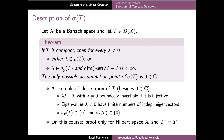This result holds for compact operators on Banach spaces and even on normed spaces which are not complete. On this course we will only present the proof in the special case where X is a Hilbert space and the operator T is self-adjoint. In this case we can shorten the proof a bit, especially since we already know that the residual spectrum of a self-adjoint operator is always empty.